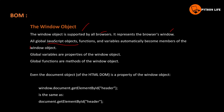The window object is the root object. Its sub-divisions include the page, DOM object models, functions, variables, and events — all are part of the window object. Global variables are properties of the window object, and functions are also part of the window object.